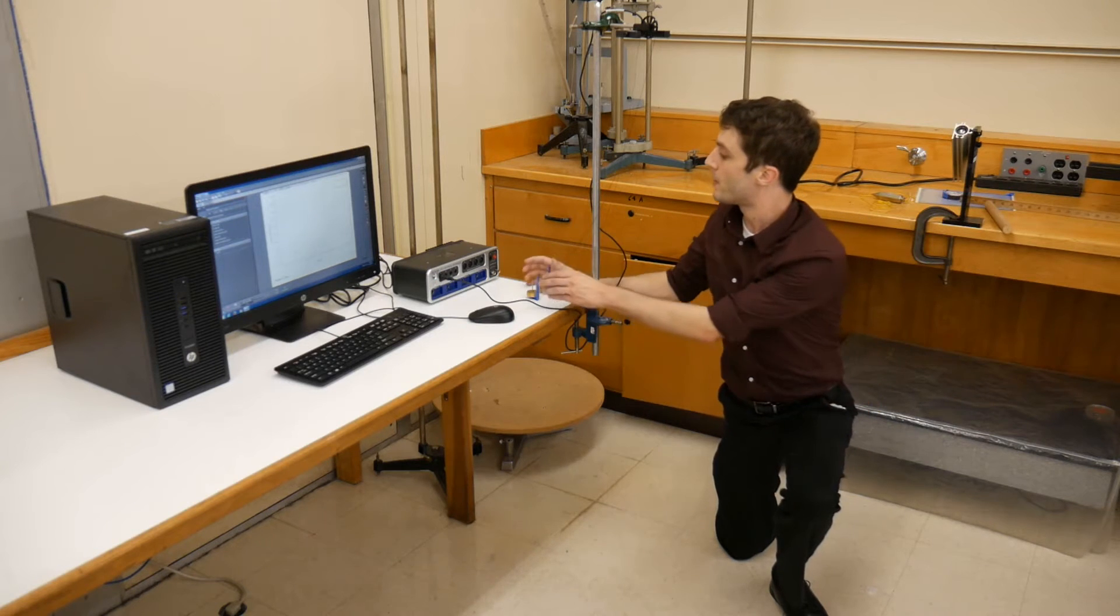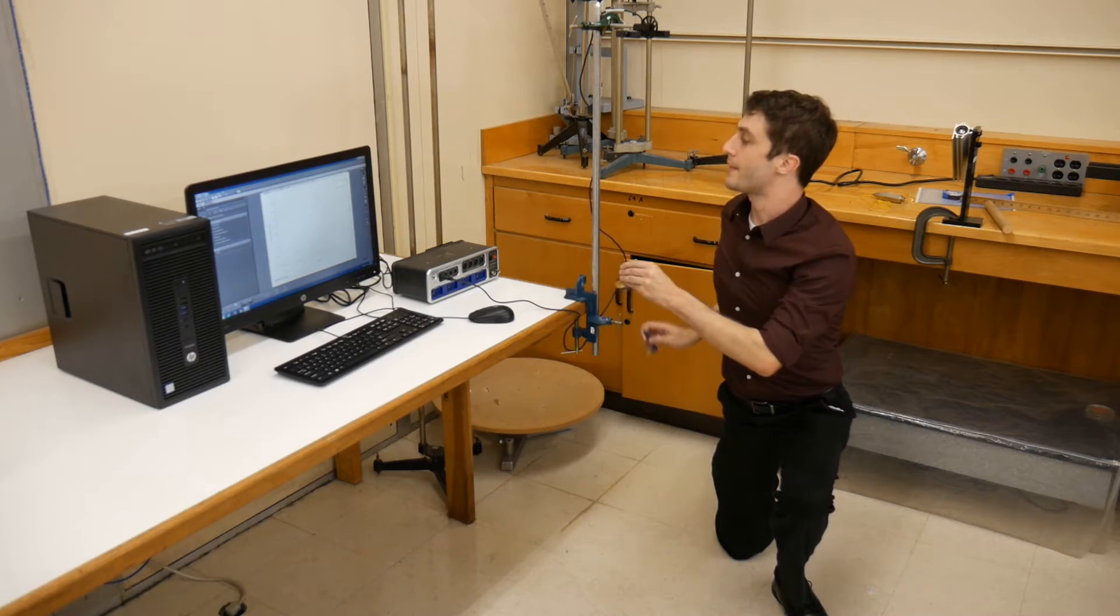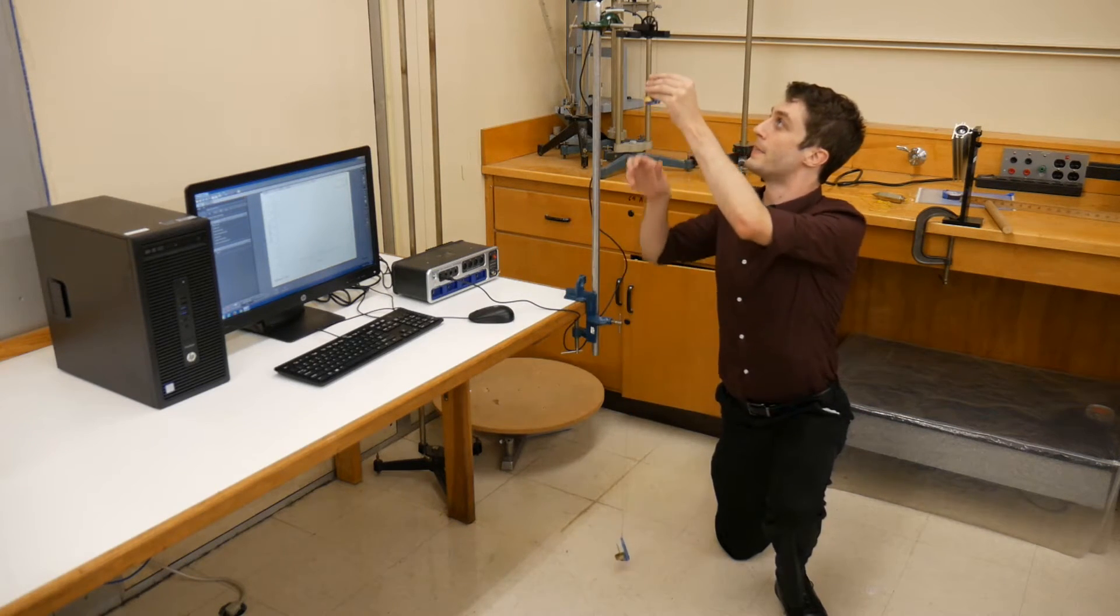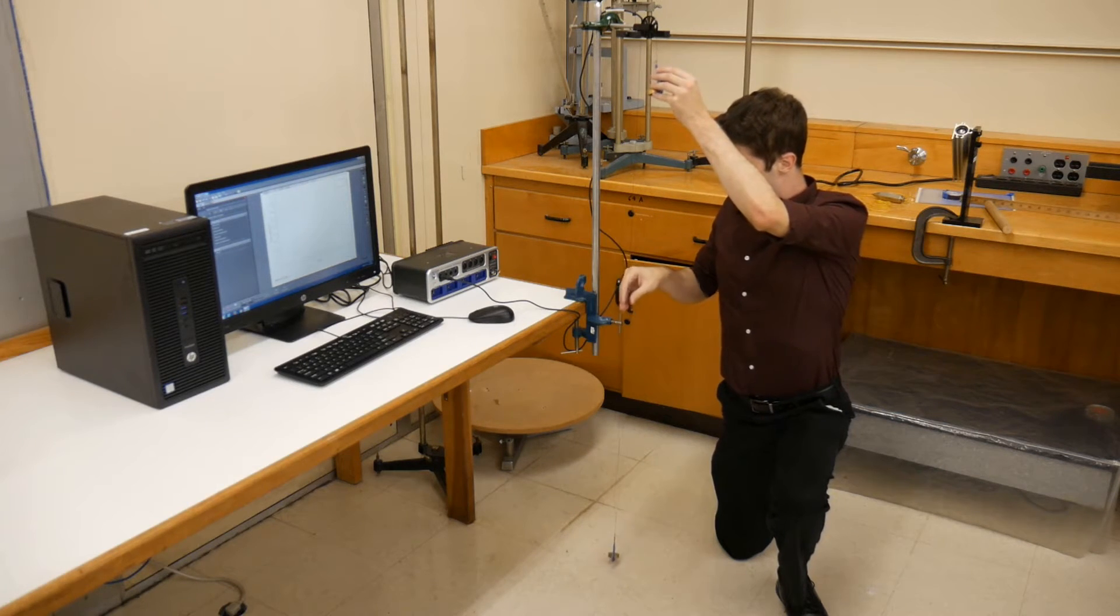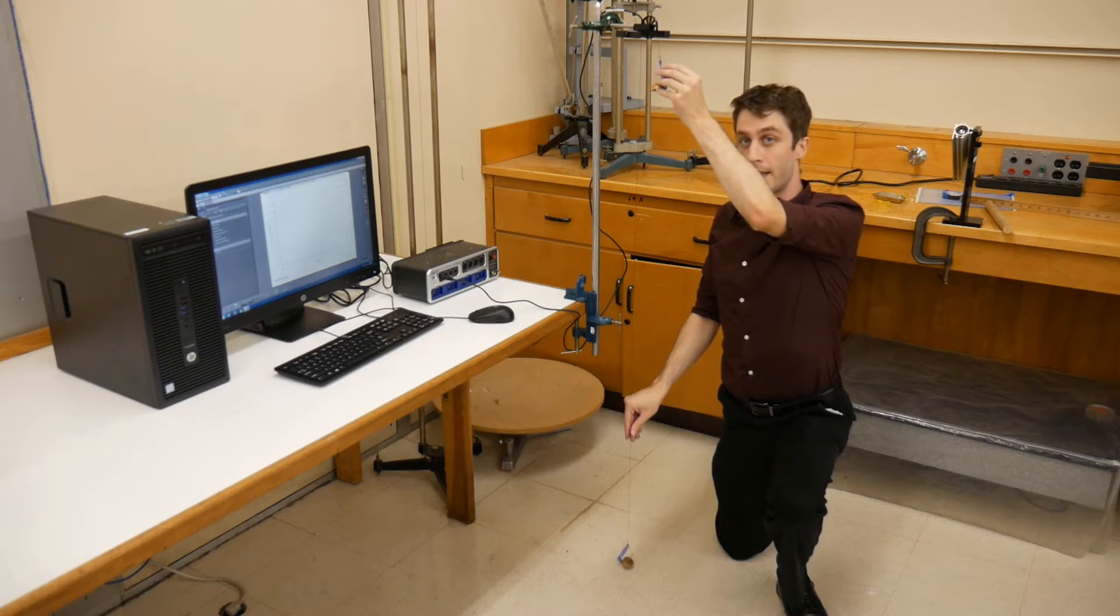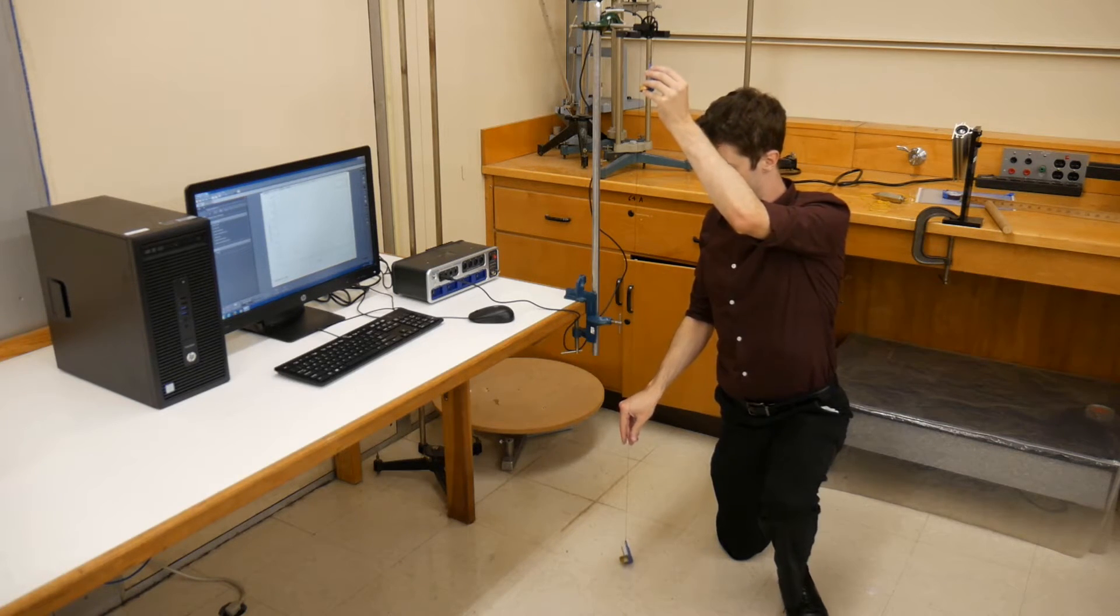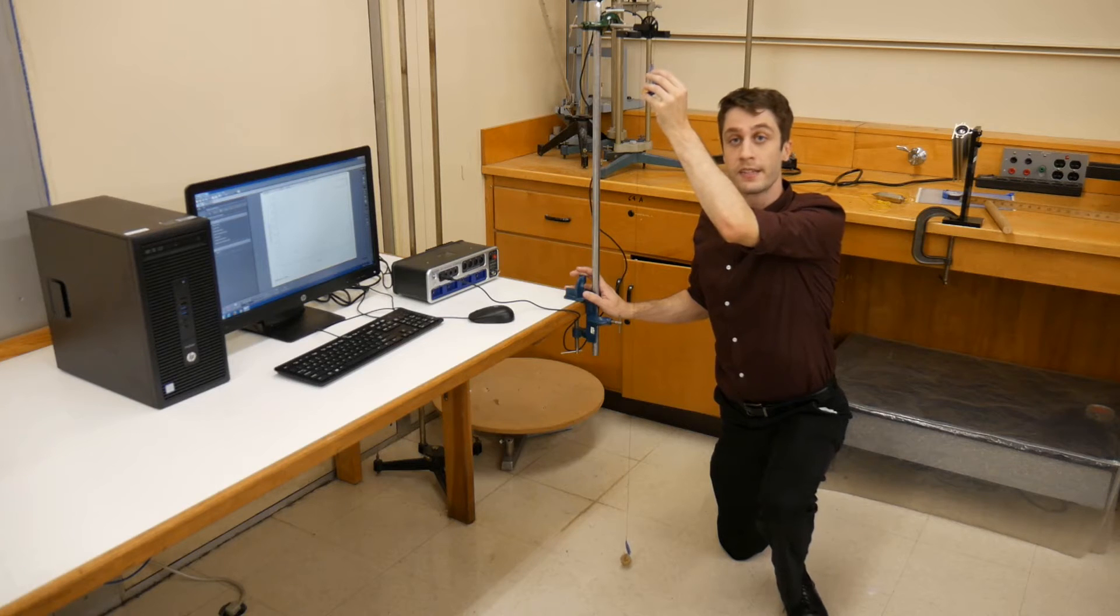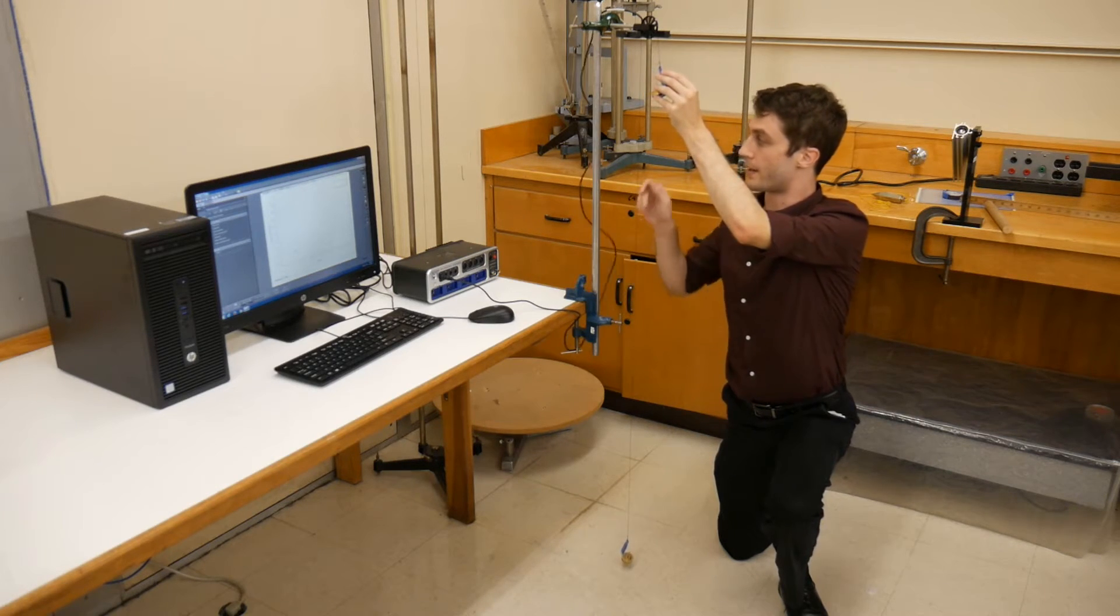Now set up your equipment. Have the heavier mass hanger up near the pulley, and the lighter mass hanger just off the floor. They may swing a little bit. I'd like you to prevent them from swinging too much because this could affect your measurement, and they may run into one another.